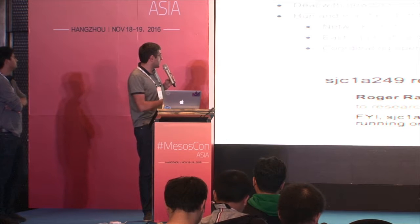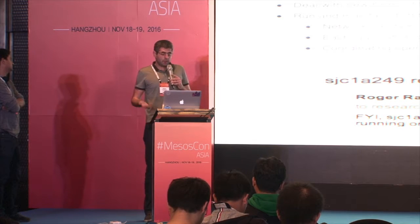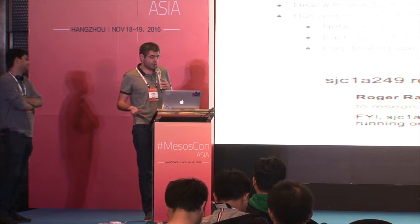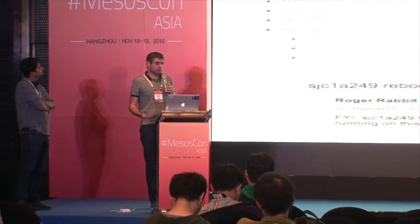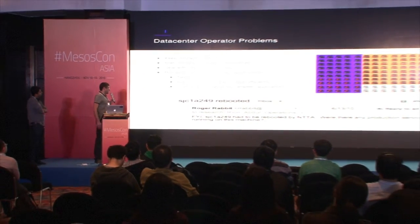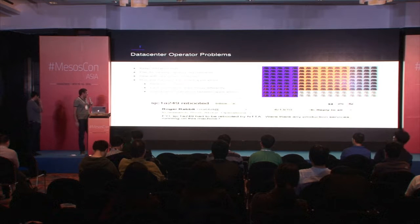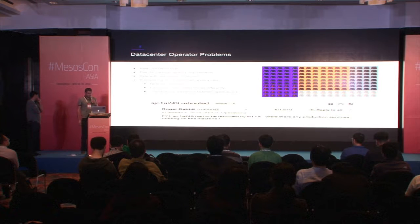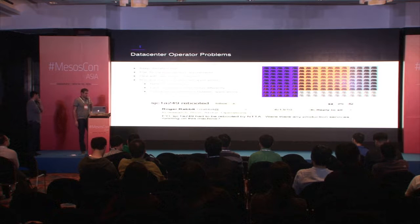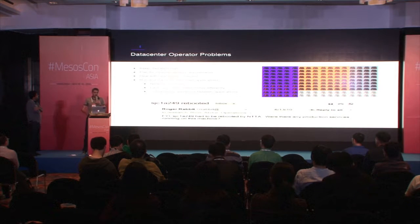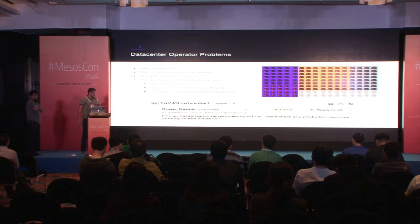What we're illustrating here is that although the operator might have slack in her data center, if something failed she needed some manual action to make sure things were back to normal. Here is a screenshot from a real email from one of the largest Mesos operators in the world. An operator is sending a message saying they rebooted a machine and aren't sure whether any production services were running on it, trying to trace the owners of the applications to figure out whether the reboot affected their service.